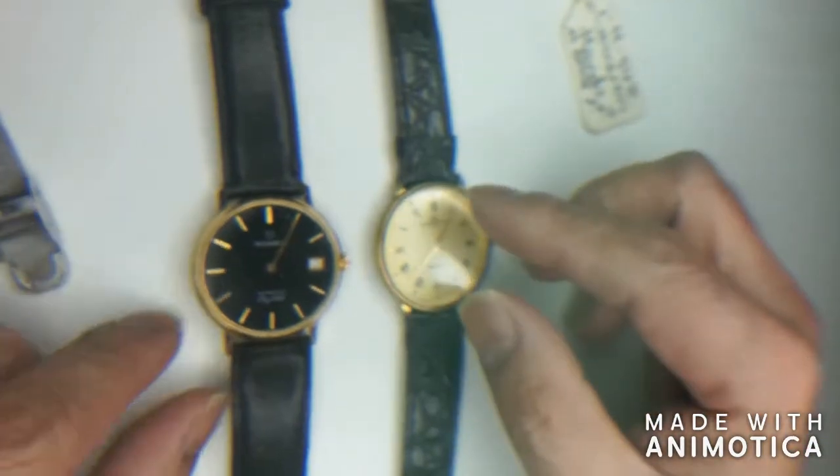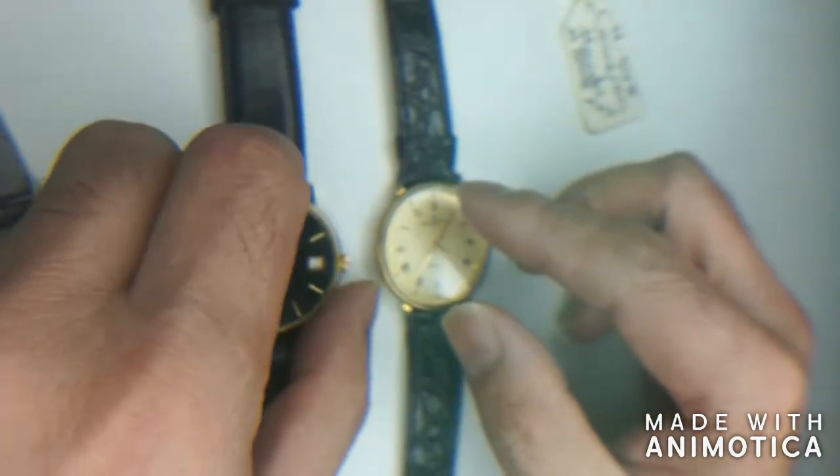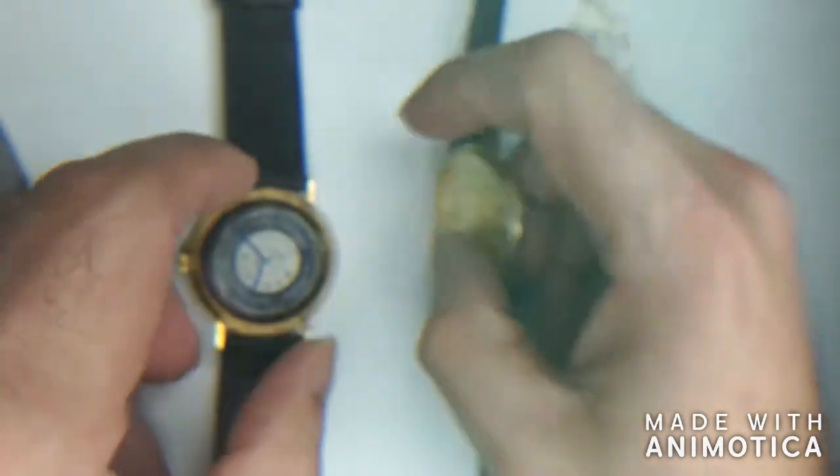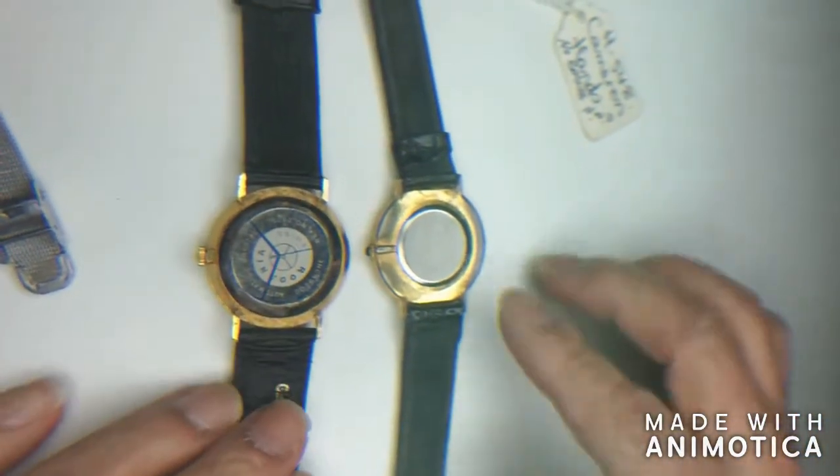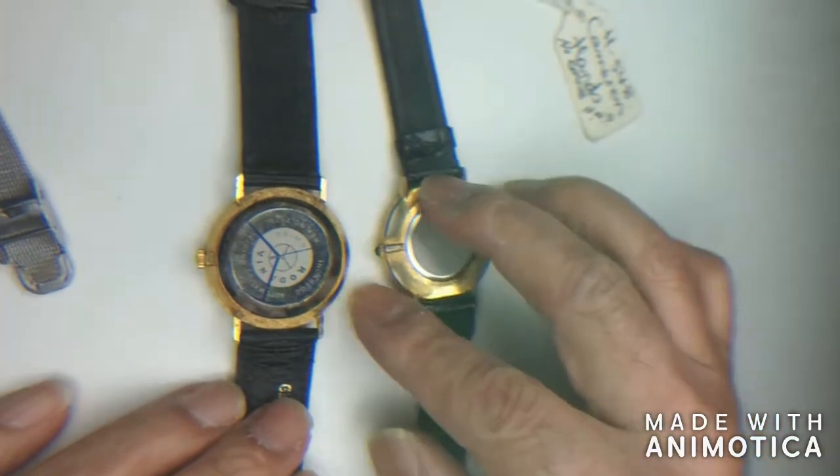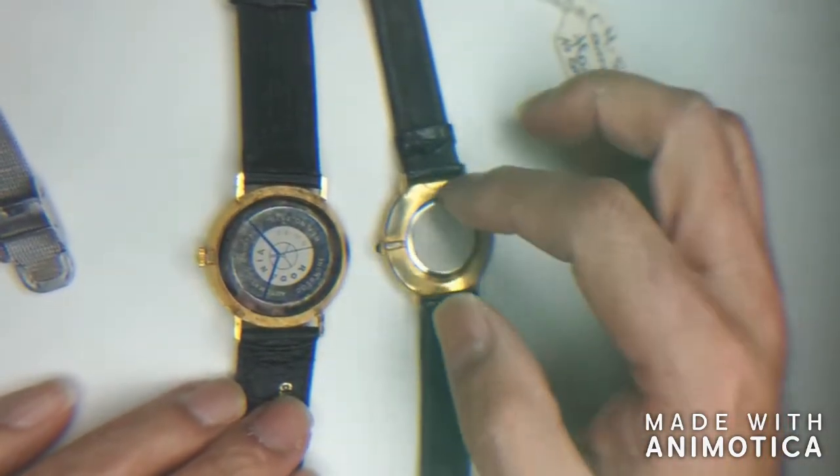And the next one is we will turn the watch around. Usually if it's a worn watch, you can see that this is really worn and the finishes are a bit rough around the polished things, right? It's rough.